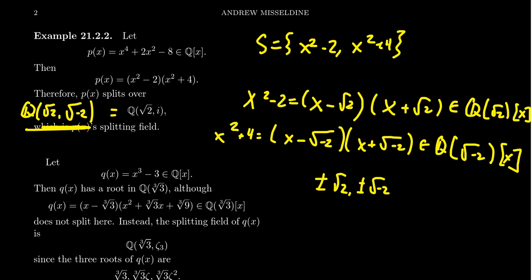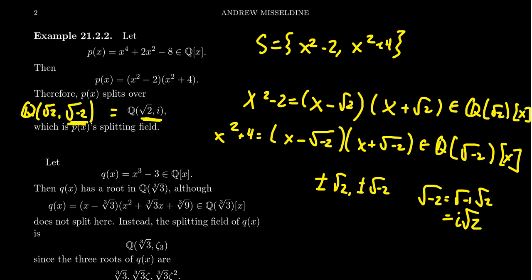The splitting field is Q adjoin √2 adjoin √(−2). By throwing in all the roots of the polynomial, the polynomial splits. If we were missing any root, it wouldn't split—that's how one builds the splitting field. We can also think of the splitting field as Q adjoin √2 · i, because √(−2) = i · √2. So this field clearly contains both √2 and √(−2). You can show both representations give degree 4 extensions of the rationals, so they are the same field—two different representations of the same splitting field. The splitting field is unique.